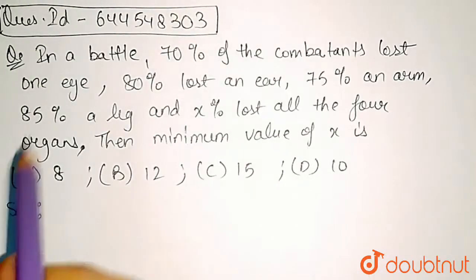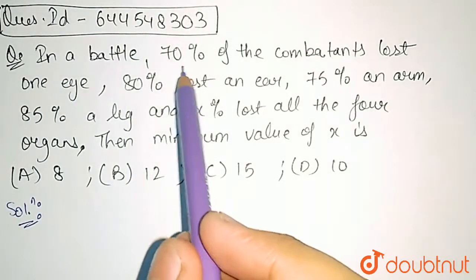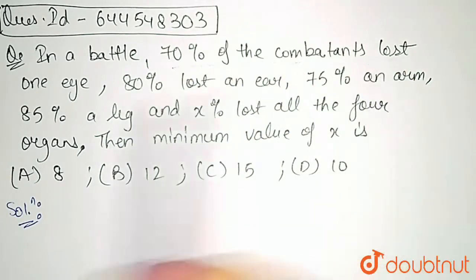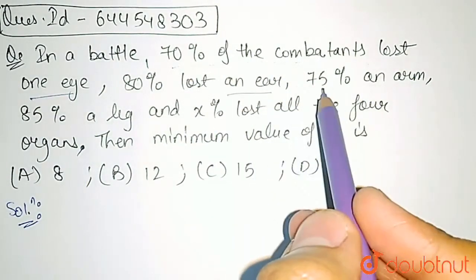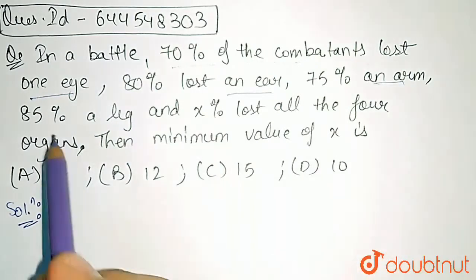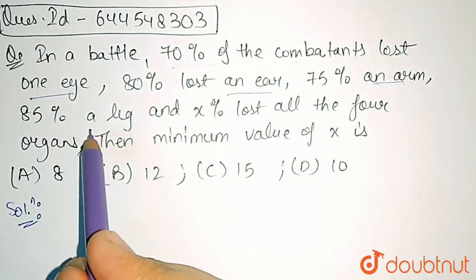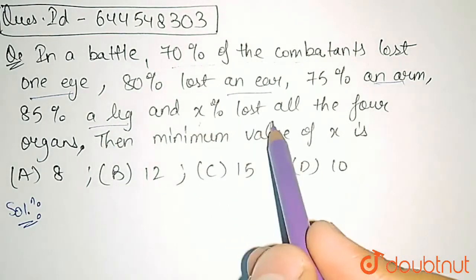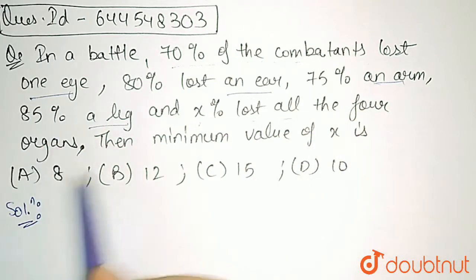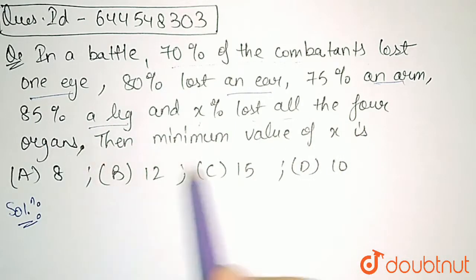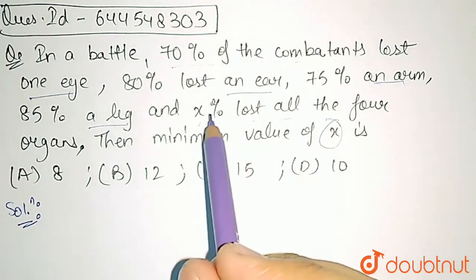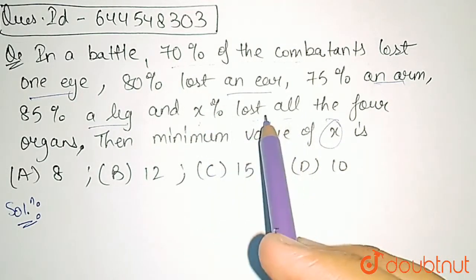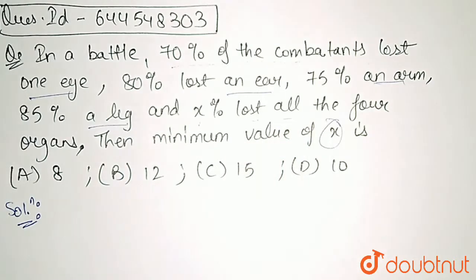In this question, it is given that in a battle, 70% of the combatants lost one eye, 80% lost an ear, 75% lost an arm, 85% lost a leg and X% of all lost all the four organs. We need to identify the minimum value of X, that is the total number of combatants who lost all the four organs.